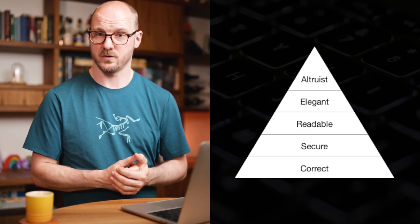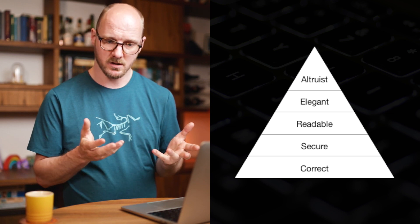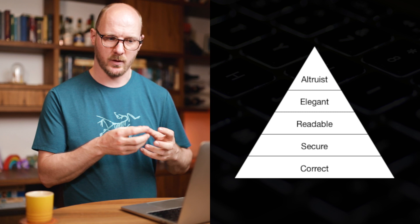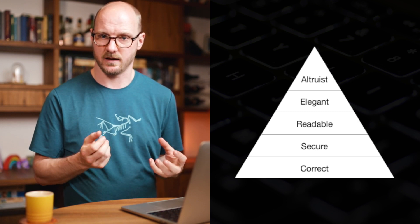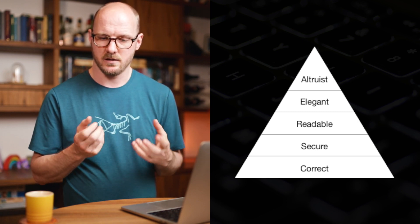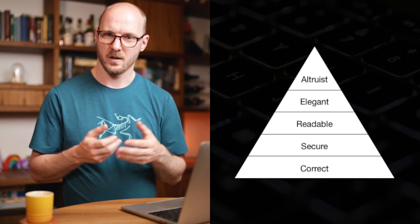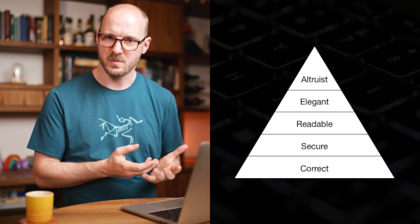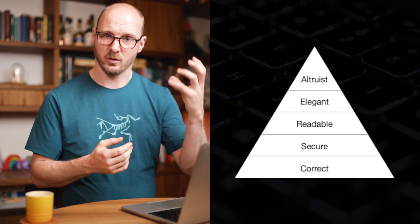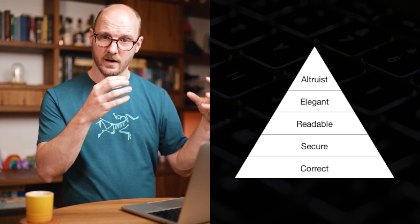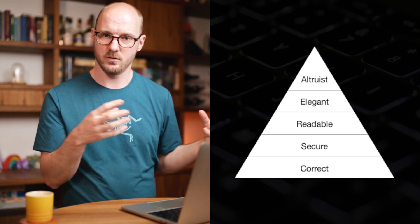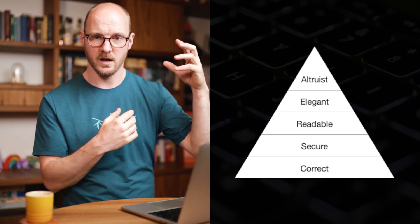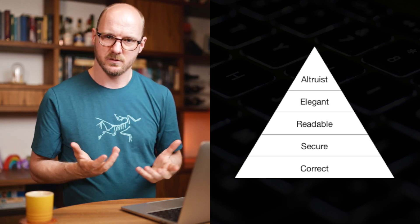Take Maslow's Pyramid of Code, for example. Imagine you are having a discussion about readability while you have not discussed the correctness layer yet — this is bike-shedding, because you're spending time on the wrong thing. The idea of this pyramid is that you go from bottom to top; each layer requires the previous one. You must do correctness before you go to secure, before you go to readability, and so forth.